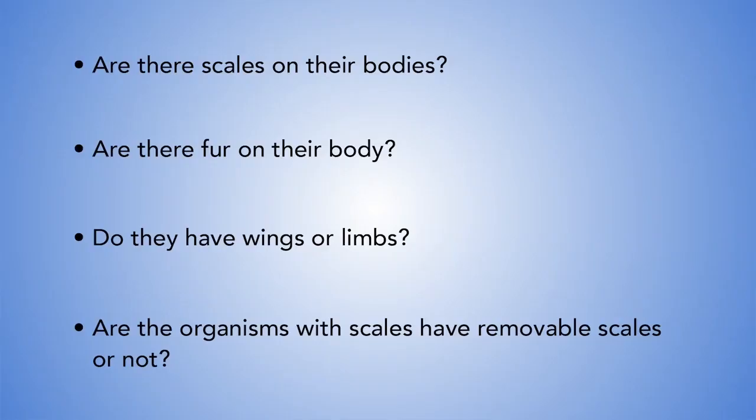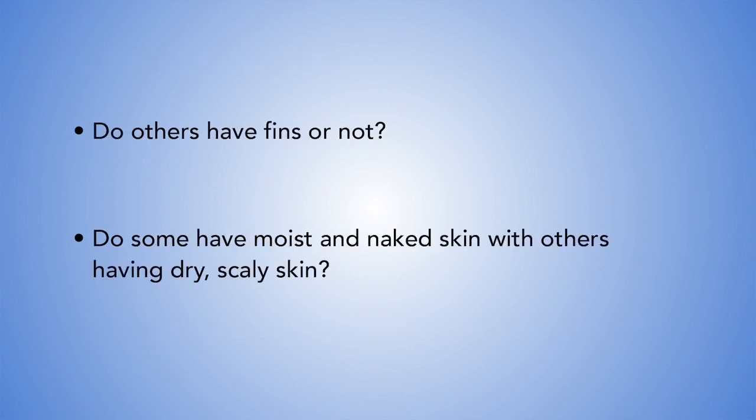The questions we ask are: Are there scales on their bodies? Do they have wings or limbs? Do the organisms with scales have removable scales or not? Do others have fins or not? Do some have moist and naked skin, while others have dry scaly skin? All these questions are asked to enable you group organisms using the dichotomous key. Now let us begin the dichotomous key.